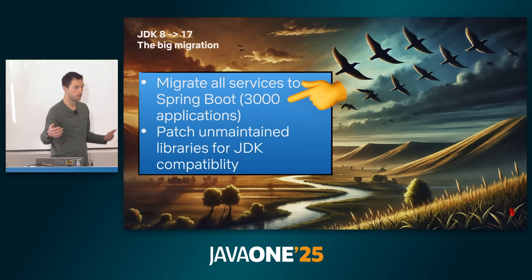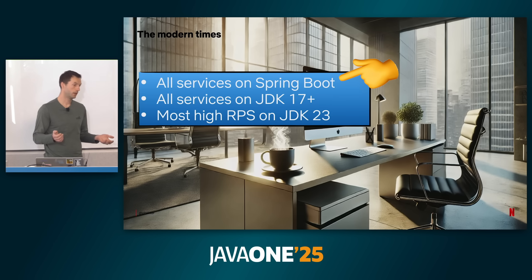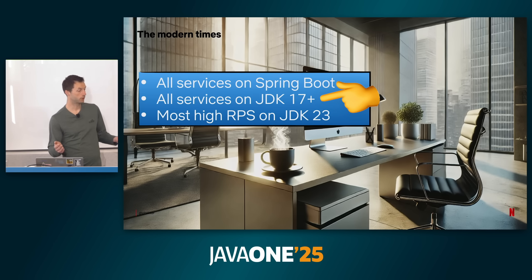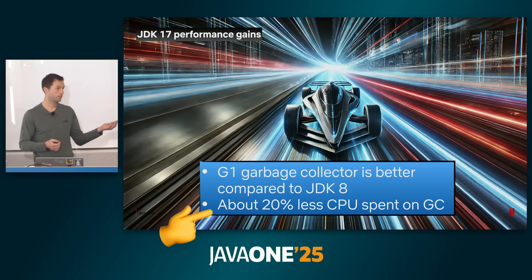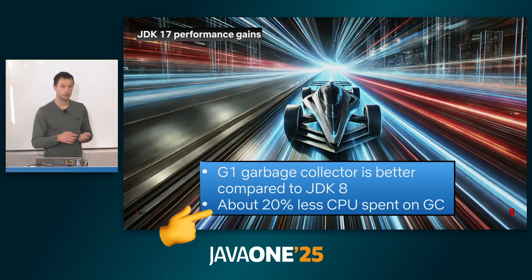Paul said it 'wasn't that much work' — though he is a staff software engineer at Netflix, so it may not be easy for everyone. What definitely wasn't easy: migrating all their services to Spring Boot — over 3,000 apps. Now all services are on Spring Boot, all on JDK 17 or higher, with most high-RPS services on JDK 23. And once they got to JDK 17, they immediately saw improvements: using G1 GC, they saw 20% less CPU spent on garbage collection just by going from JDK 8 to JDK 17.